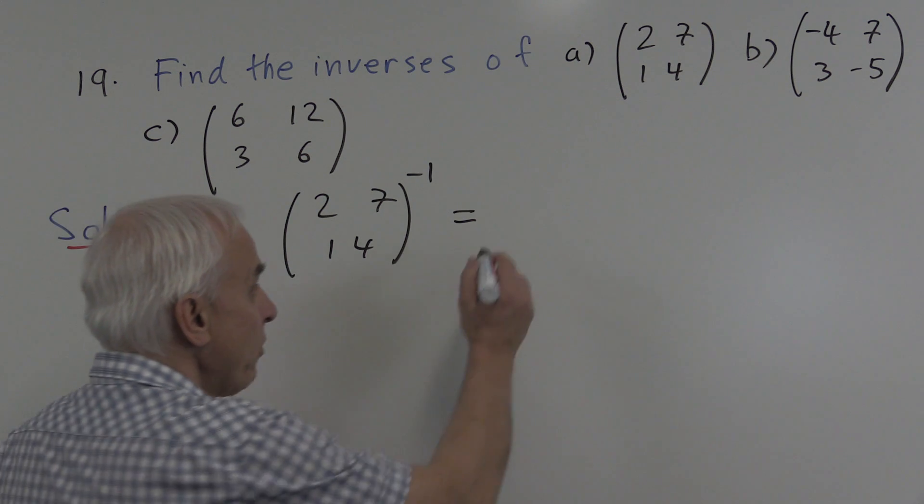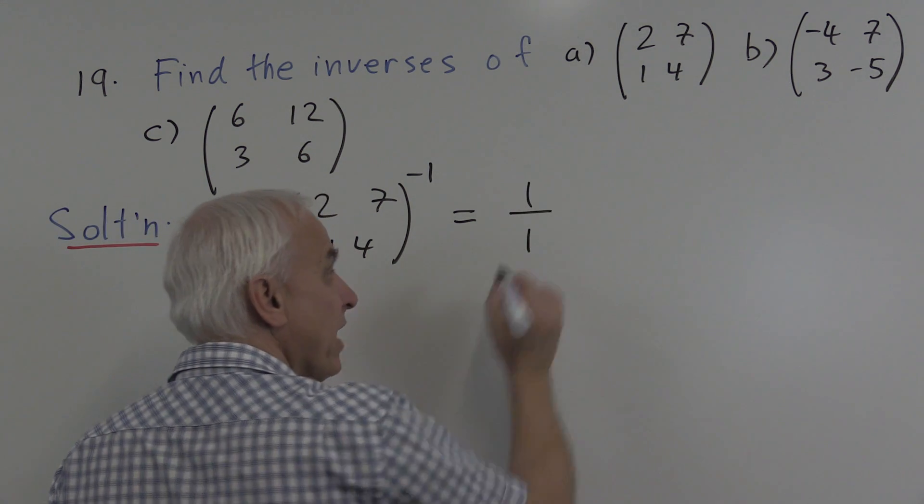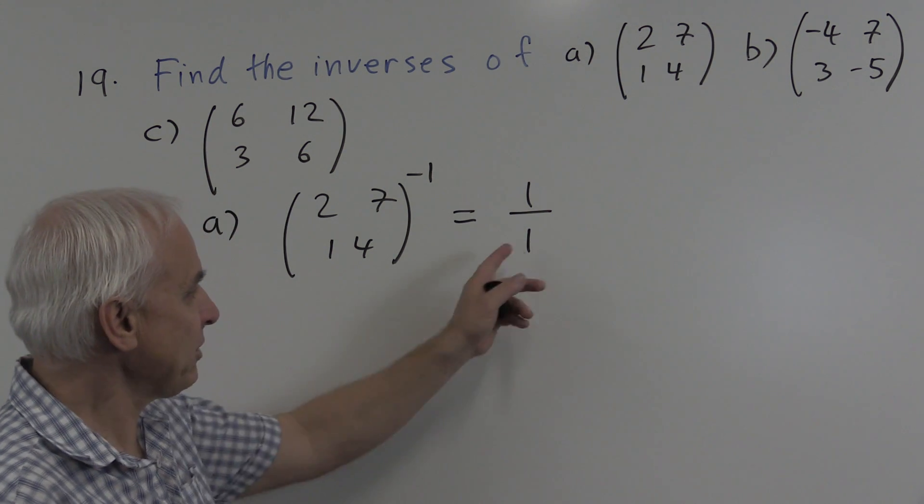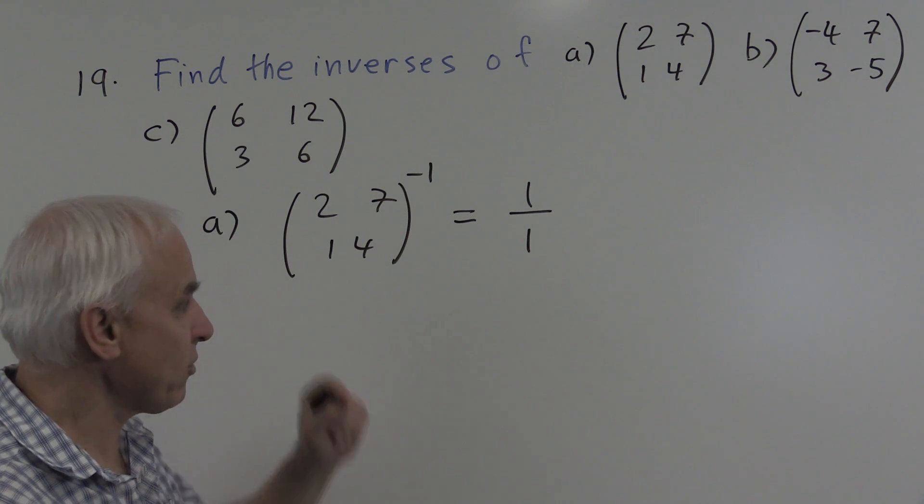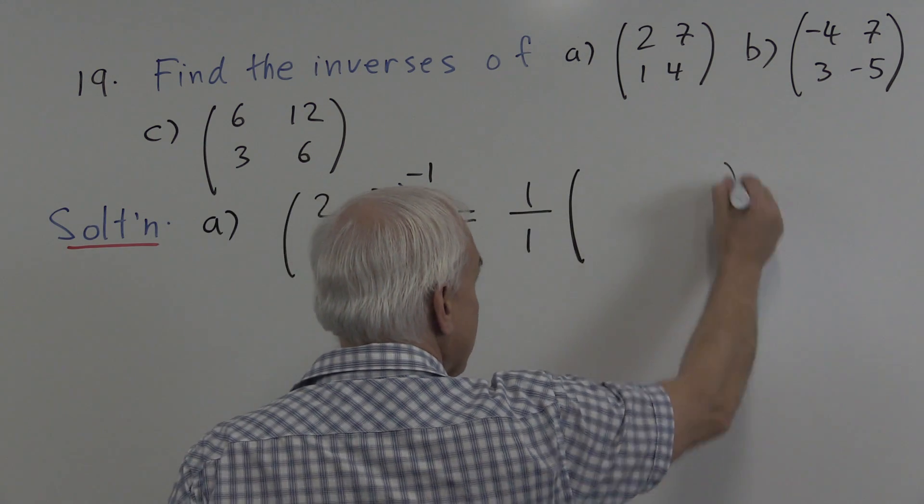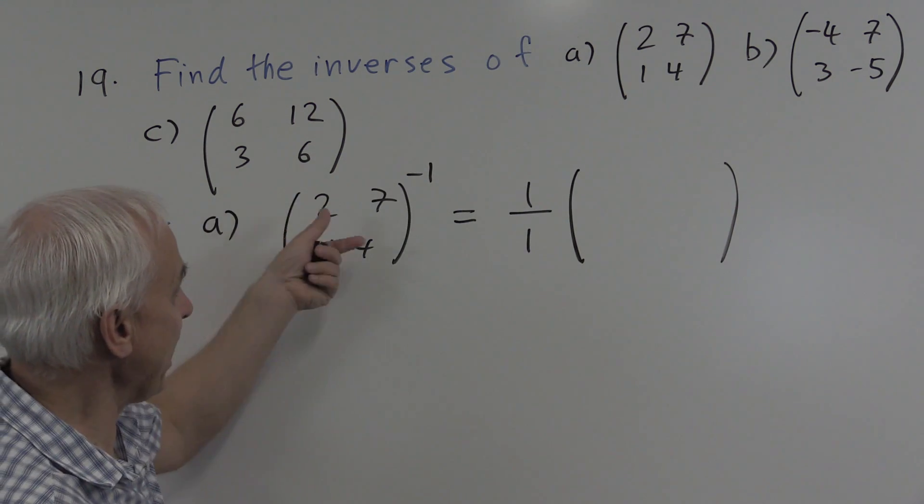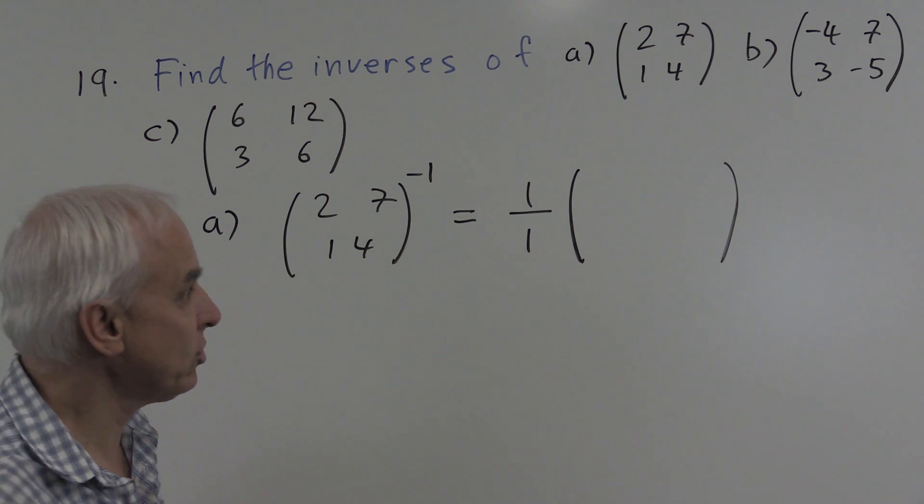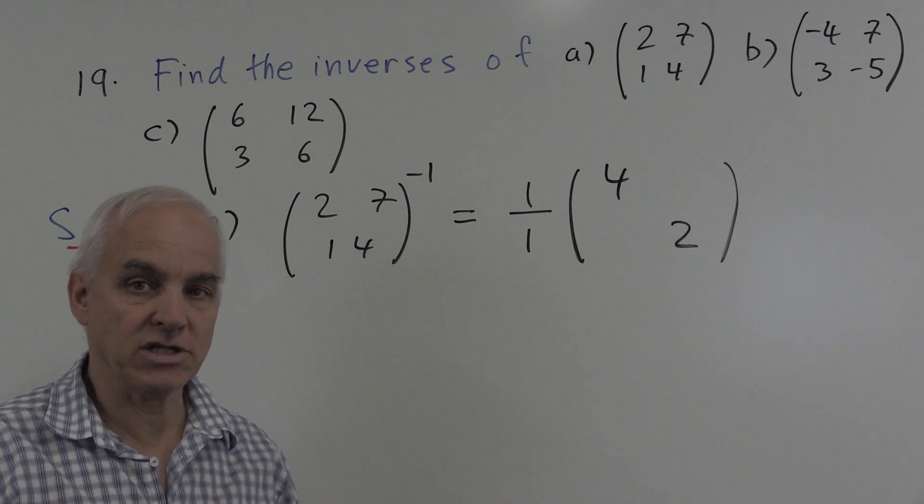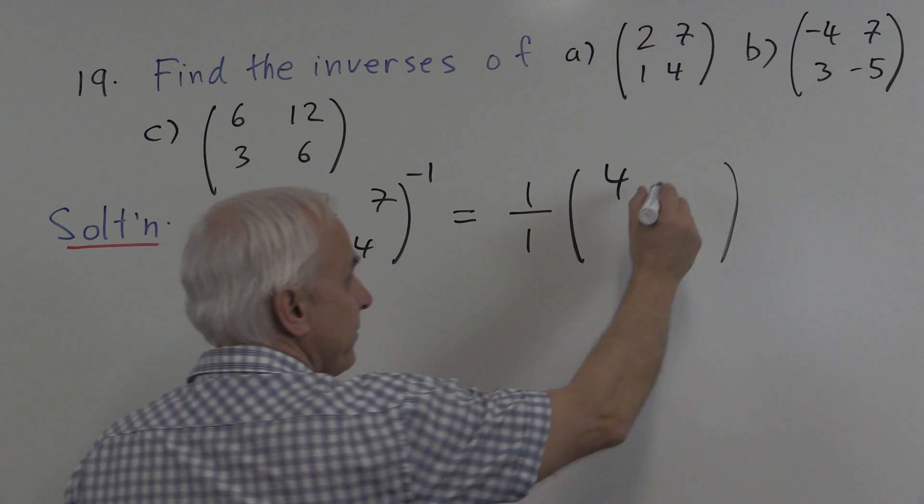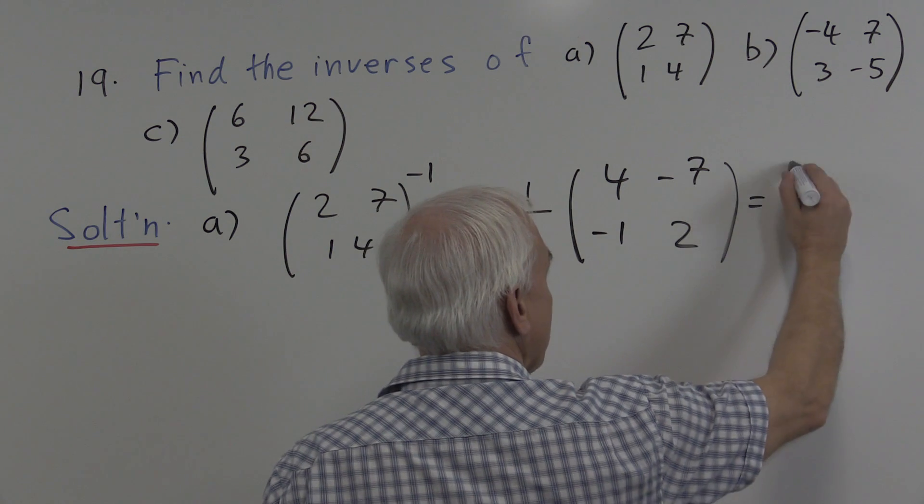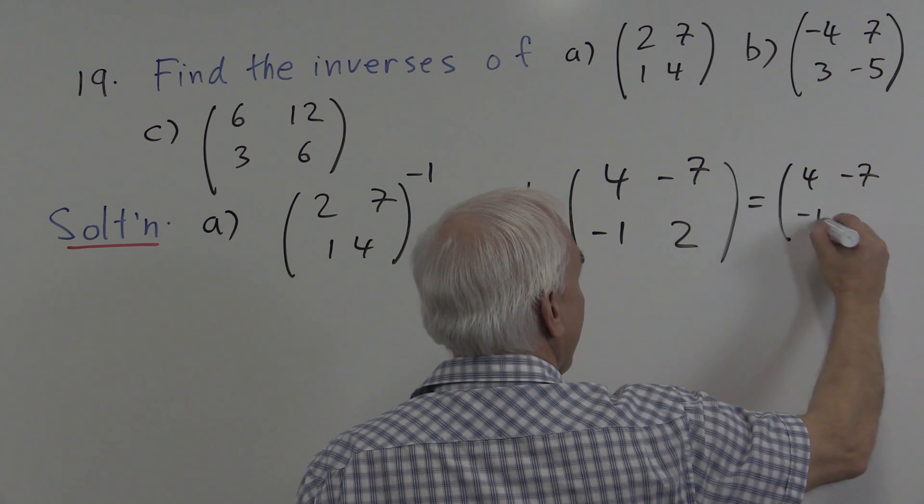And what's the formula for the inverse? Well, in general, we have to divide by the determinant. Dividing by one doesn't do much, but I'll just put it there just to remind us that we need to incorporate that one over the determinant as part of the solution. And then what we do is we take the entries of this and we interchange the two diagonal entries, and we multiply the off diagonal entries by minus one. And so the answer is just the matrix four minus seven minus one, two.